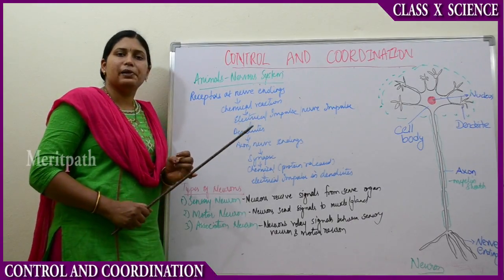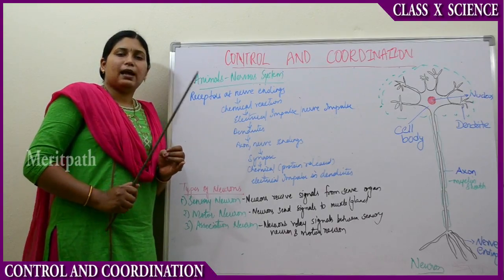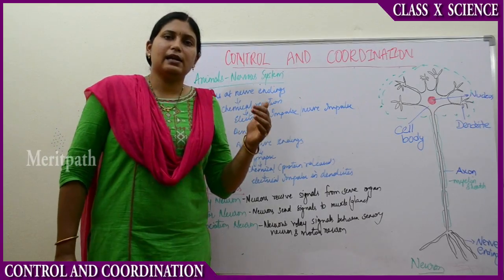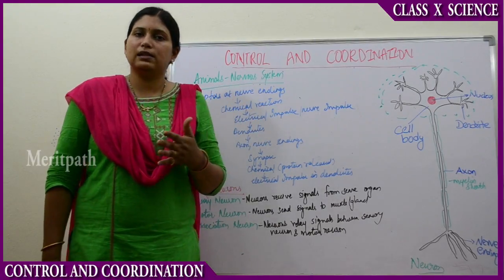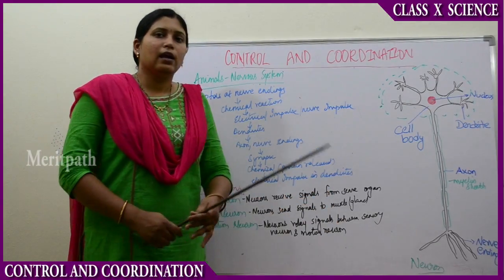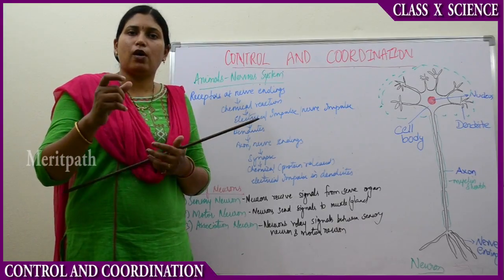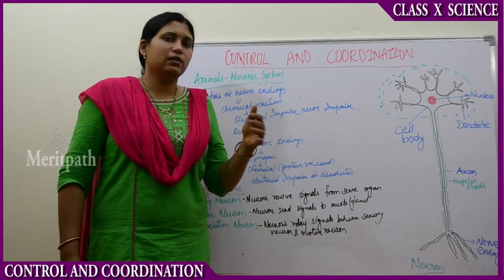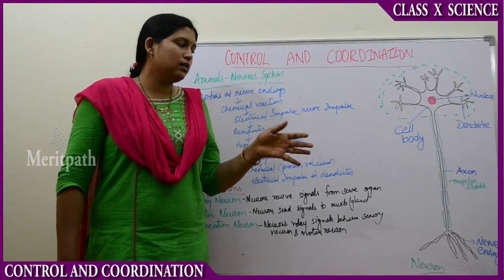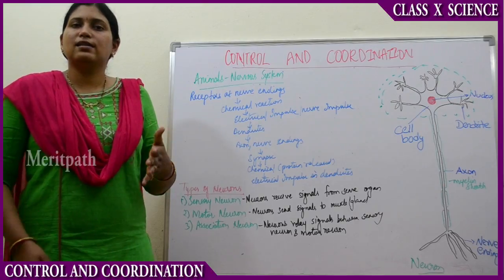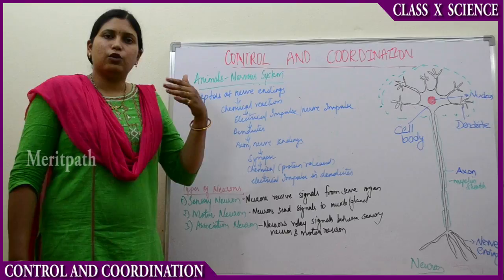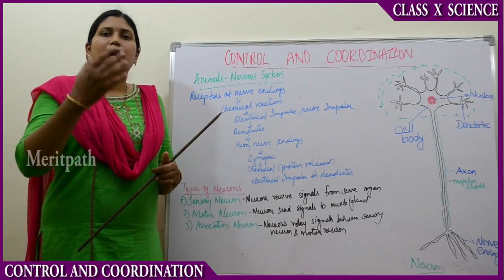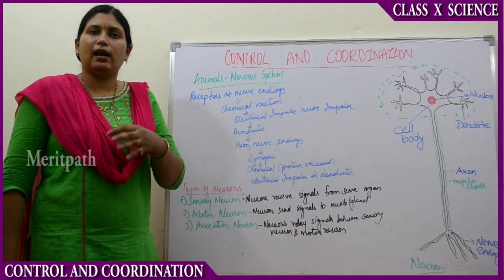So now you have understood how a message is transmitted. Receptor cells release a chemical which creates an electrical impulse in the dendrites of the neuron. From the dendrites to the tail of the neuron, this electrical impulse is transmitted via the axon to the nerve endings. After the nerve endings there is a small gap — the synapse — where a chemical protein triggers a reaction, creating an electrical impulse that passes through the dendrites of the next neuron. This is how through a network of neurons electrical impulses are transmitted and messages are sent and received in the brain.